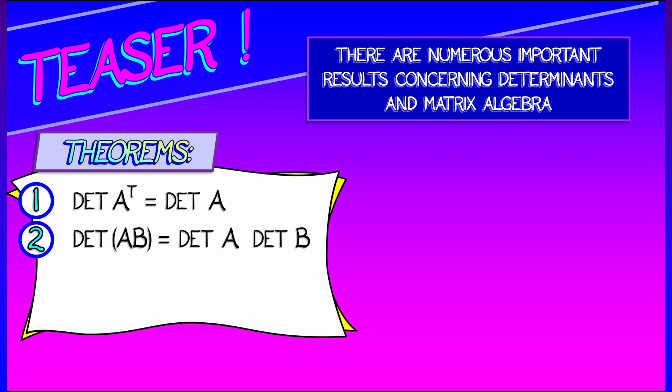Second, and this one is so important, the determinant of a product is the product of the determinants. Assuming that you've got square matrices involved so that this makes sense, that is a crucial result that we are going to rely on later.